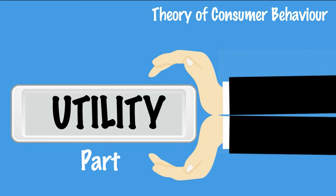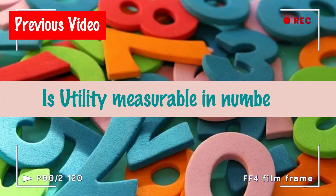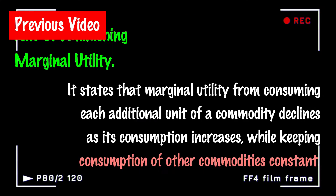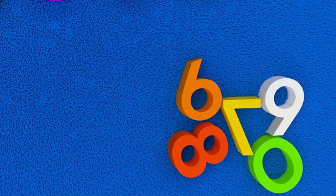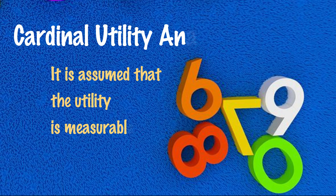Hello everyone. This video is the second part of utility as part of the theory of consumer behavior. In the first video, we had discussed about marginal utility and total utility. We had seen how utility could be measured in numbers. This is what is called cardinal utility.